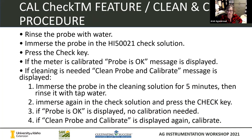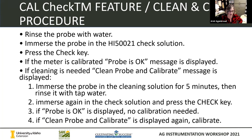The cal check feature means you have to carry around less solution and do fewer steps before you're ready to sample. You rinse the probe with water, immerse the probe in your check solution — and you're all getting several little containers of check solution — then press the check key. If it's calibrated, it's going to give you a 'probe is okay' message. If it needs to be cleaned, it might give you a 'clean probe and calibrate' message. To clean it, immerse it in cleaning solution for five minutes, rinse it with tap water, put it back in the check solution, and press the check key again. If it gives you that message a second time, you do need to calibrate.